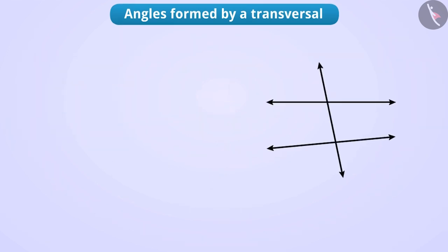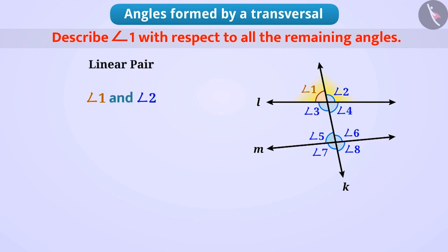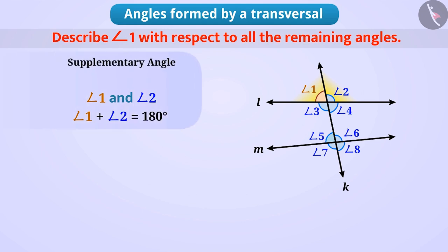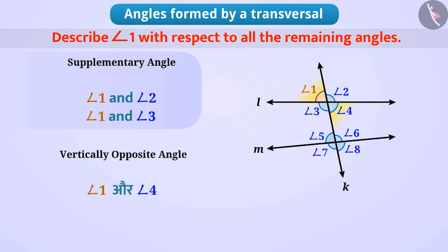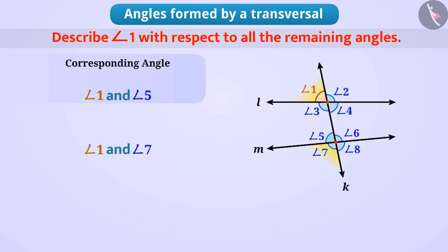Let us look at an interesting question. Here, the transversal K of lines L and M is making the shaded angles. Describe angle 1 with respect to all the remaining angles. Angle 1 and angle 2 form a linear pair, meaning their sum is 180 degrees. Therefore, angle 1 is the supplementary angle of angle 2. Similarly, angle 1 and angle 3 are also supplementary angles. Angle 1 is the vertically opposite angle of angle 4. Angle 1 is the corresponding angle of angle 5, because they have a different vertex, are on the same side of the transversal, and are at corresponding positions of the two lines. Angle 1 and angle 7 are exterior angles.